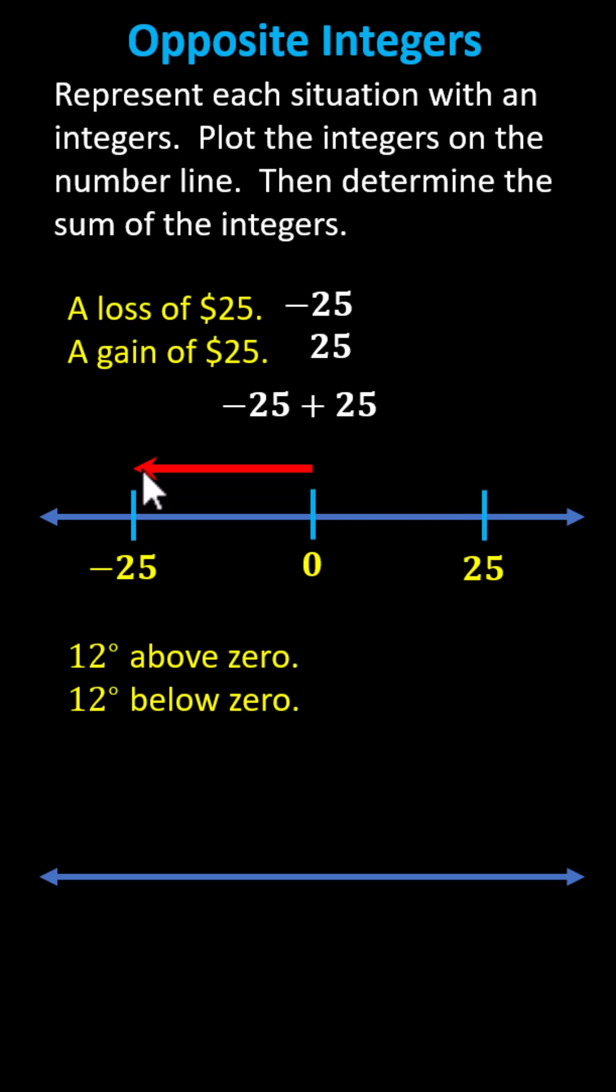And then from here, because we're adding positive 25, we would move 25 units to the right of negative 25, which you notice brings us back to zero, which indicates the sum is zero.